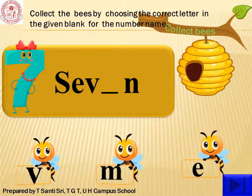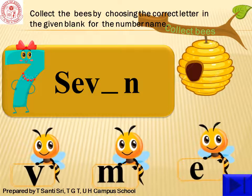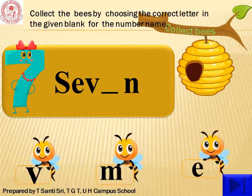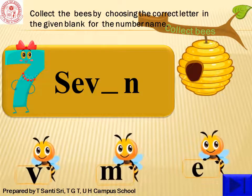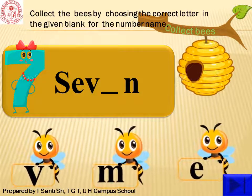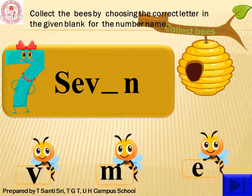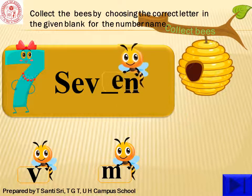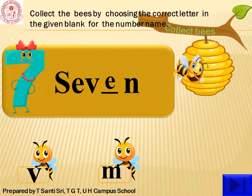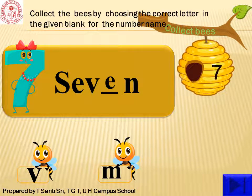What is here? Yes, it's 7. Do you know the spelling? S-E-V-dash-N. What letter will come here? It is E. S-E-V-E-N, 7. Repeat once again: S-E-V-E-N, 7.